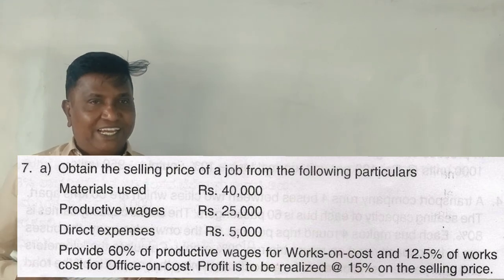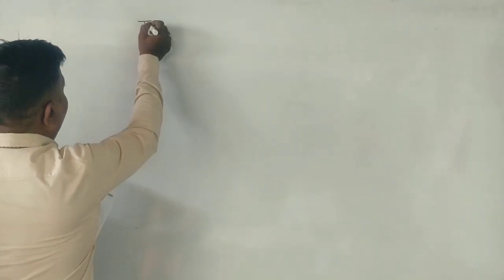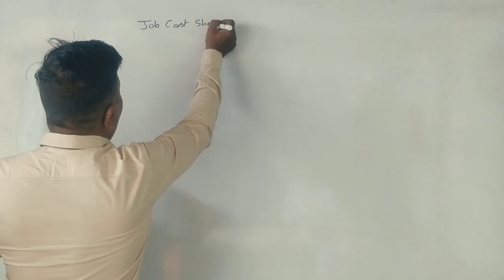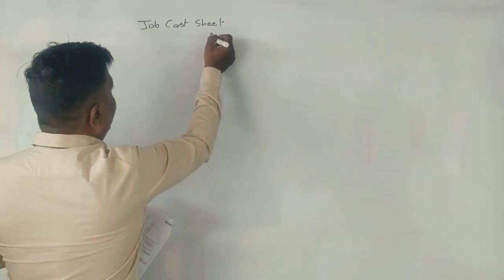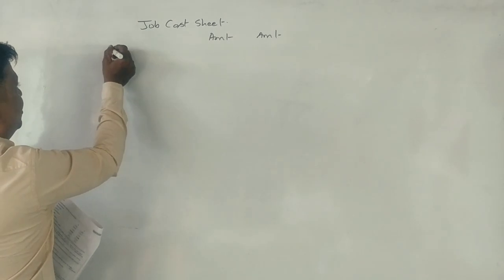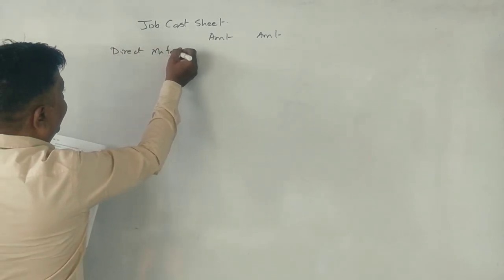Selling price, how is it? Cost sheet, what is it? Job cost sheet. This is the correct amount and amount in rupees. First, direct materials, yes, 40,000.